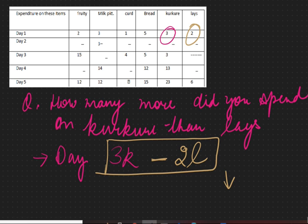We don't know the value of l, but we know that if the kurkure is of 10 rupees, obviously three tens are thirty, and if lays is of 5 rupees, so two fives are ten. So if we subtract these two, we'll get the difference between the money spent on these two.